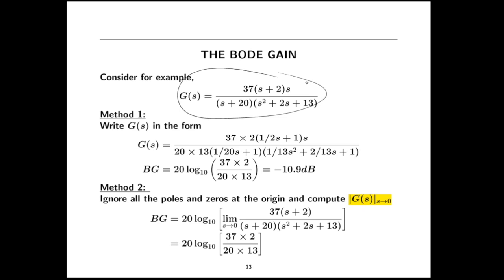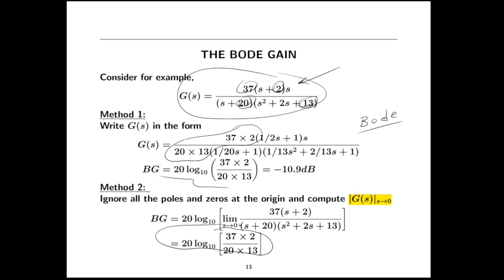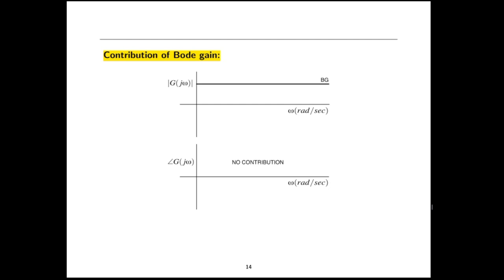For the Bode gain, there are a couple of approaches. One way is to rewrite the transfer function in Bode form, factoring out constants like 2, 20, and 13, to get the leading coefficient, then convert to dB. Another way is to leave it in Evans form, ignore any poles or zeros at the origin, and just multiply together the constant coefficients — for example, multiplying 37, 2, 13, and 20 — to get your Bode gain directly.